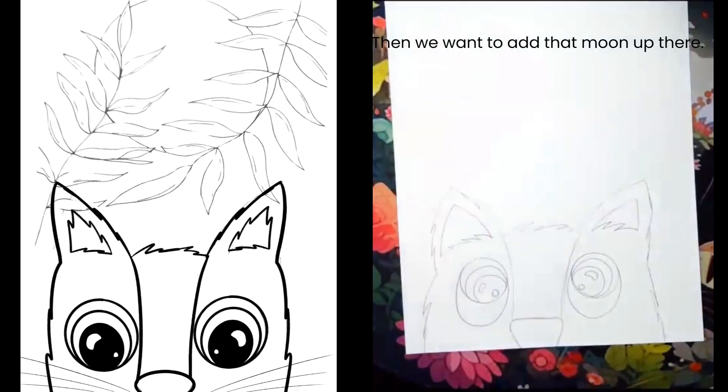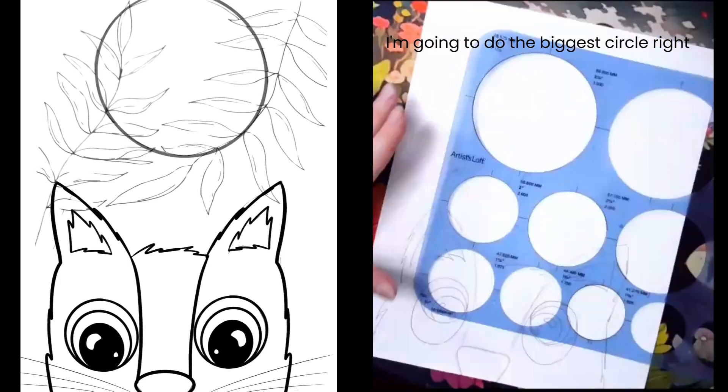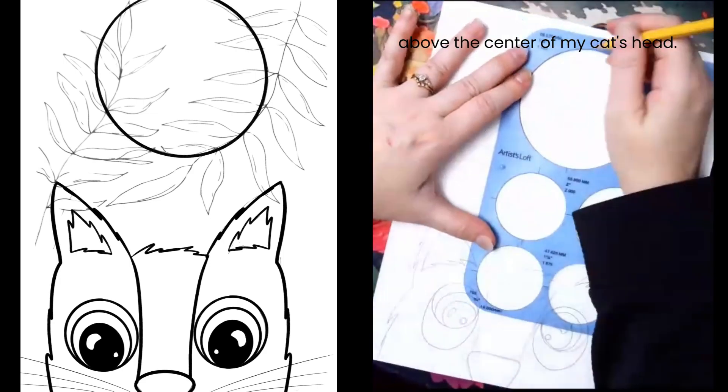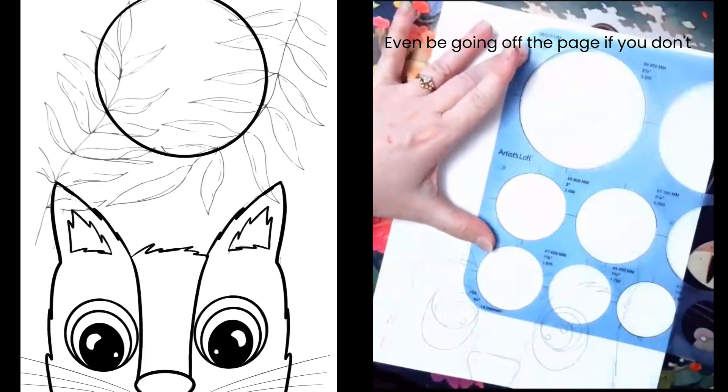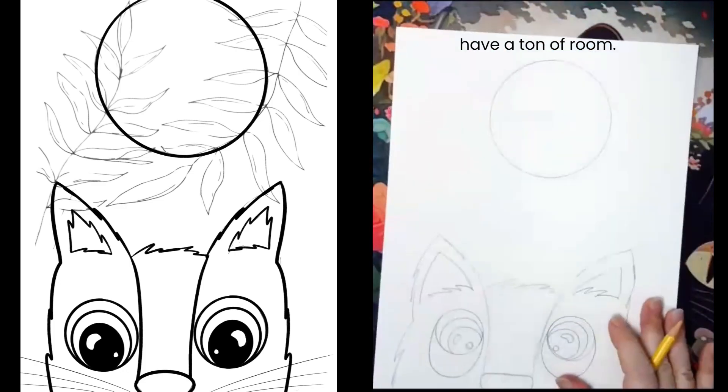And we want to add that moon up there. I'm going to do the biggest circle right above the center of my cat's head. It can even be going off the page if you don't have a ton of room.